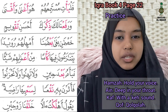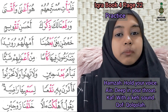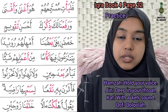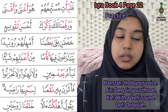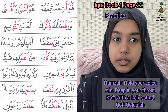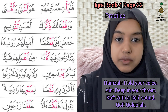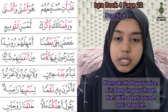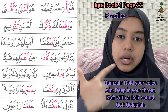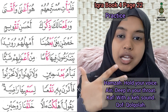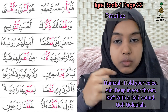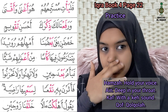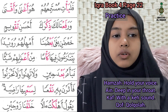Assalamualaikum warahmatullahi wabarakatuh. Page 22, book number 4. Now we are on the second part. We have already read the first three rules. Now are the following verses. Whereby we have learned on the previous page, your Hamza, A'in, Ka and Qa are four different letters when you put the sukun on them. So now rule number 4.